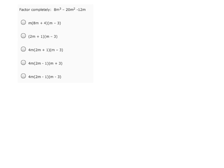Okay, again we're asked to factor completely. We have 8m cubed minus 20m squared minus 12m.